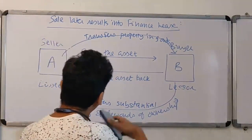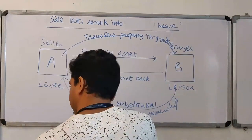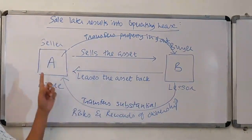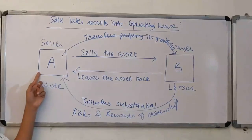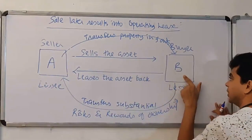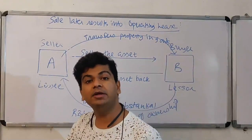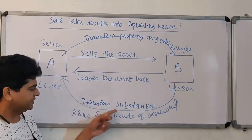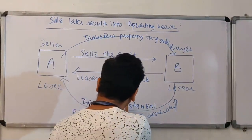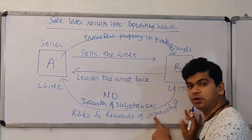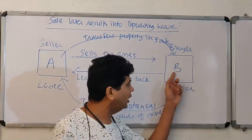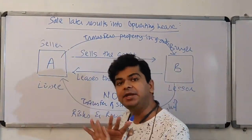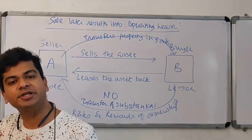What if the sale results into an operating lease? The first transaction is the sale transaction — the seller makes the buyer the legal owner of the asset. Then the buyer enters into an operating lease. When you enter into an operating lease, you are not transferring substantial risk and rewards of ownership. So B becomes the legal owner and enjoys the benefits of ownership, while A as seller is deprived of those benefits.